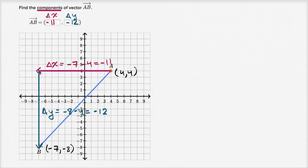And you could see that here. If I'm starting up here, I have to go four down just to get back to the x axis. Then I have to go down another eight. So I have to go down a total of 12.